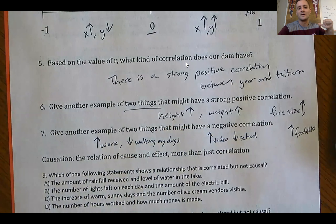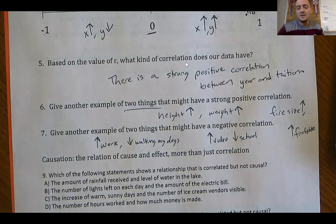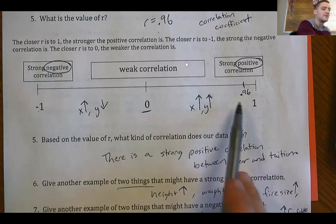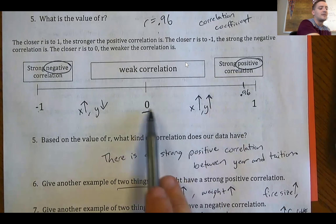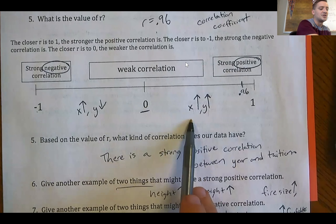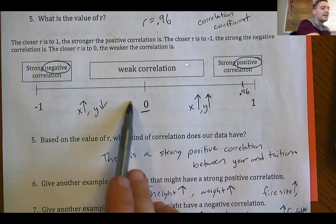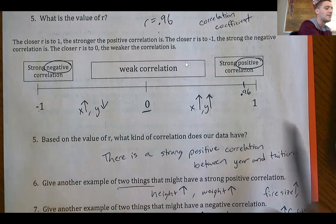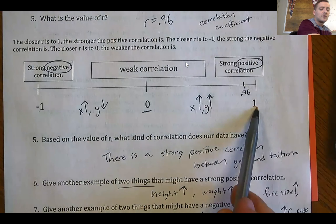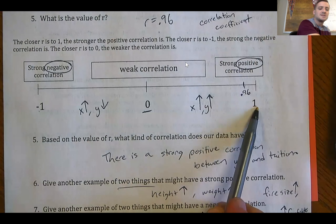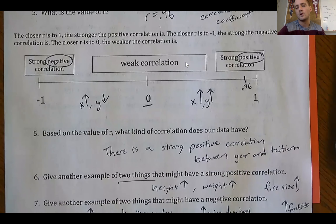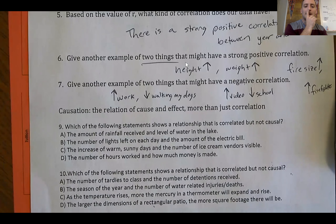Variables can have this relationship called a correlation. Correlation is essentially how well our line fits our data. A positive correlation means a positive slope — as x goes up, y goes up. A negative correlation means a negative slope — as x goes up, y goes down. The closer r is to 1 or negative 1, the stronger the relationship. The closer to zero, the weaker the relationship.